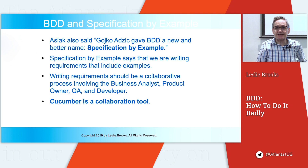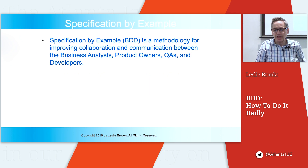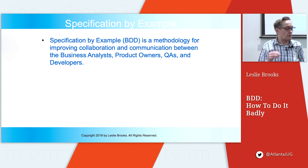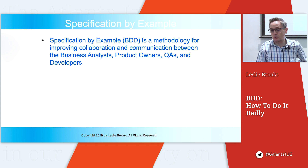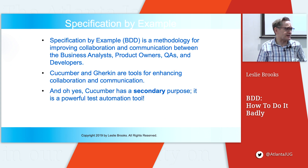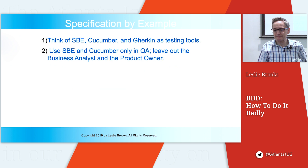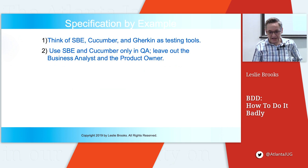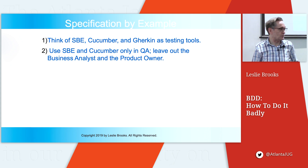Cucumber is a collaboration tool. Specification by example, or BDD, is a methodology for improving collaboration and communication when we are writing requirements and developing software. Cucumber and Gherkin are tools for enhancing that communication. And yes, Cucumber is also a powerful test automation tool, but that's its secondary purpose. The second thing you can do to do BDD badly is use specification by example, BDD, and Cucumber only in QA and leave out the business analyst and the product owner.